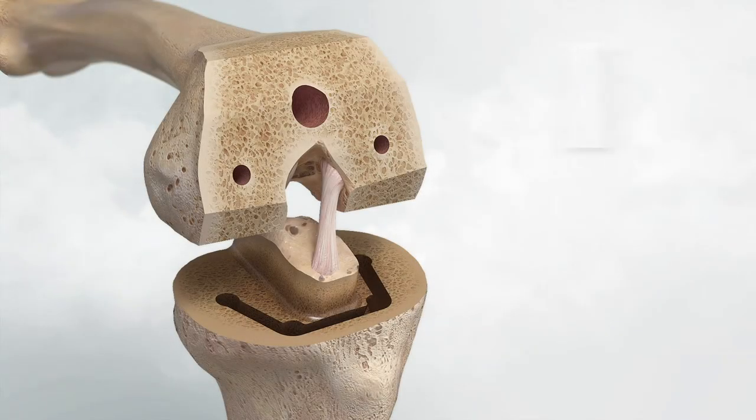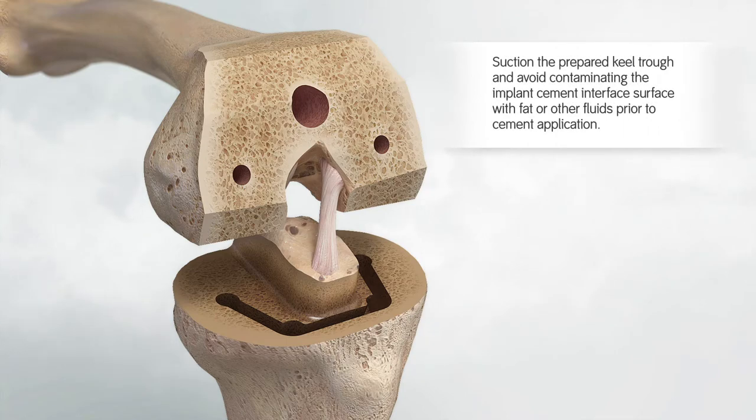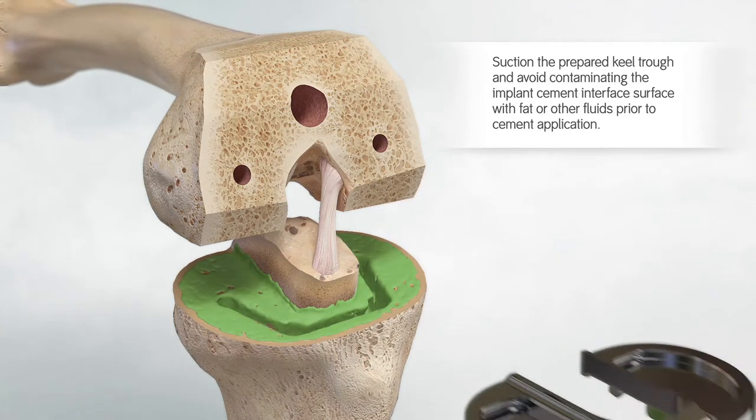Flex the knee and place a thin bent Hohmann laterally. Apply generous amounts of cement to the dry underside of the baseplate, onto the tibia surface, and into the prepared keel trough.